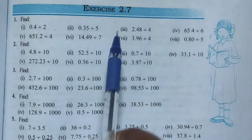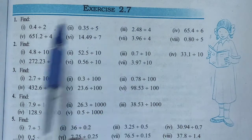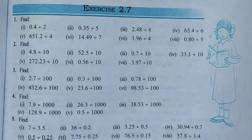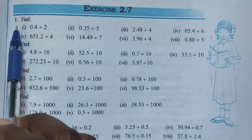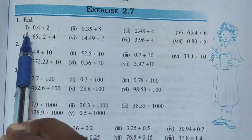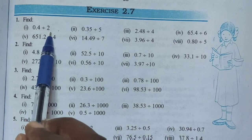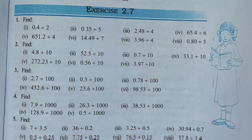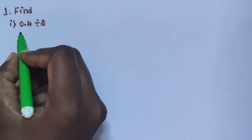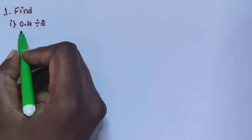Hi children, let us start exercise 2.7, chapter 2, fractions and decimals. Question number 1, find. Sub question 1: 0.4 is divided by 2.